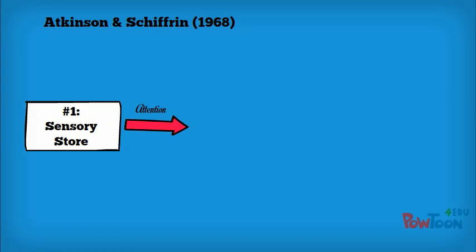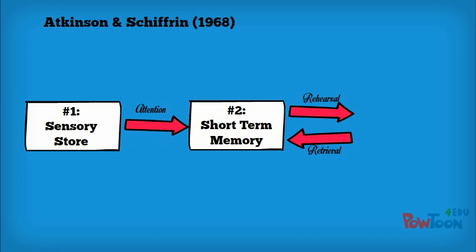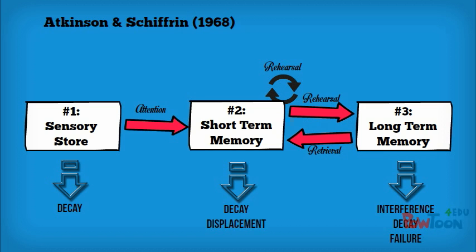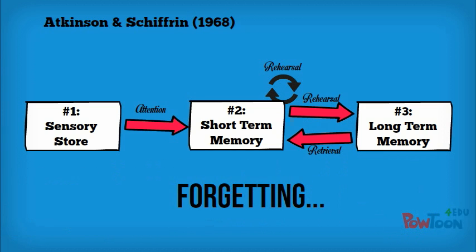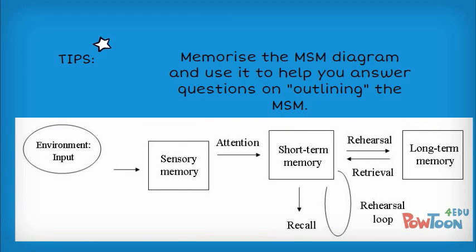And there you have it — that is the multi-store model of memory. In the exams you're about to sit, it's likely you'll get questions on some part of the MSM: describe, outline, evaluate. We've only discussed AO1 information here, but in the other videos I'll be uploading, we'll go into more AO2 and AO3 depth. One tip I'm going to give you for this part of the exam is to memorise the diagram of the multi-store model — pull it out and annotate it in the exam if you get any questions on outline, describe or discuss. It's so much quicker.